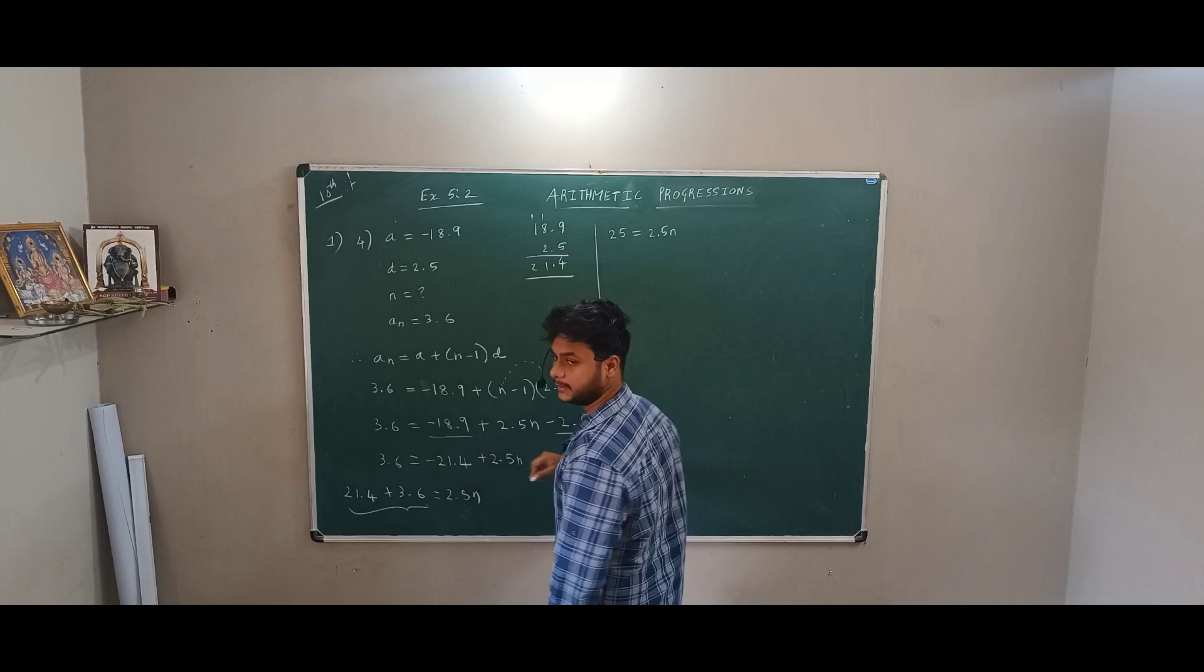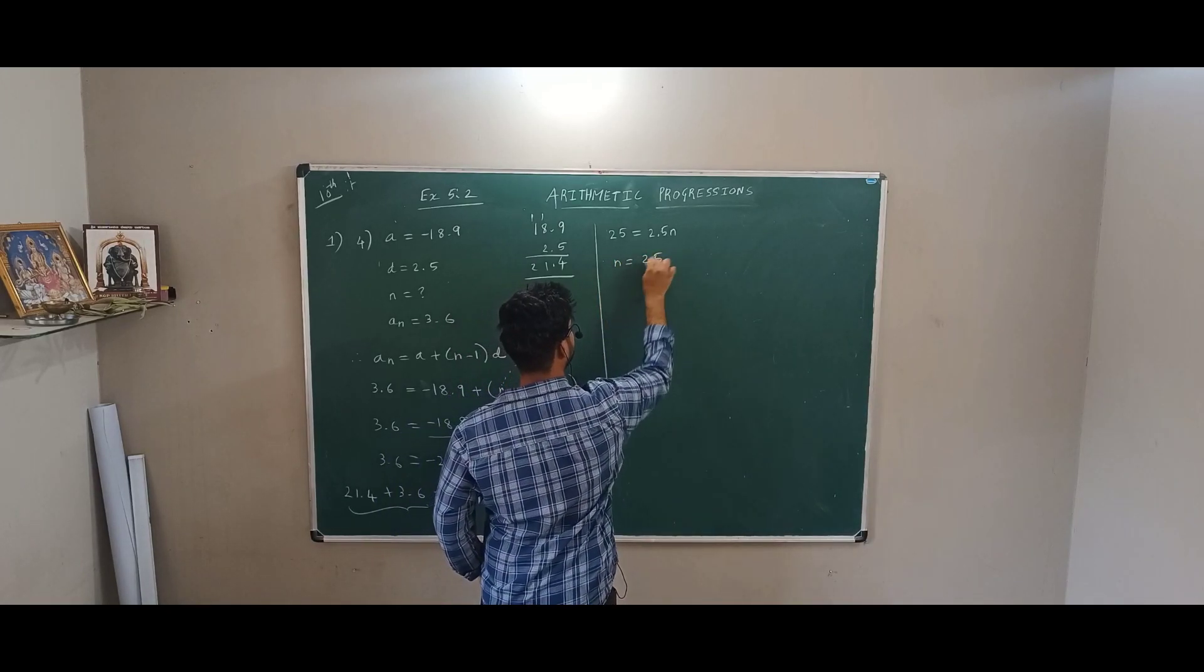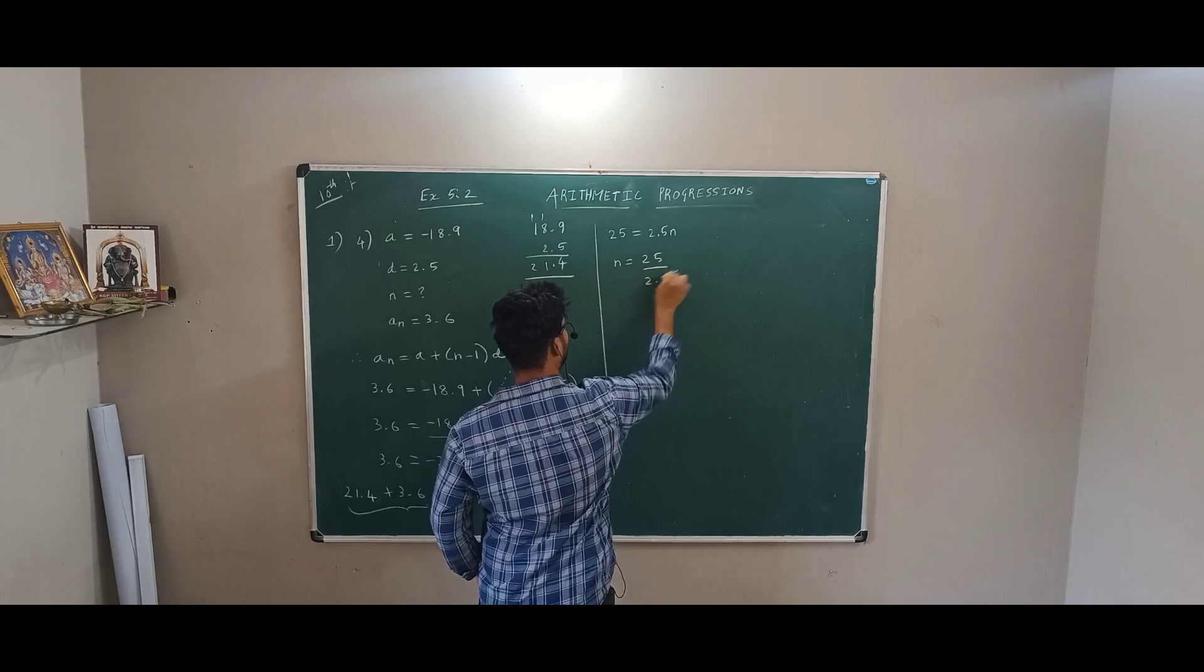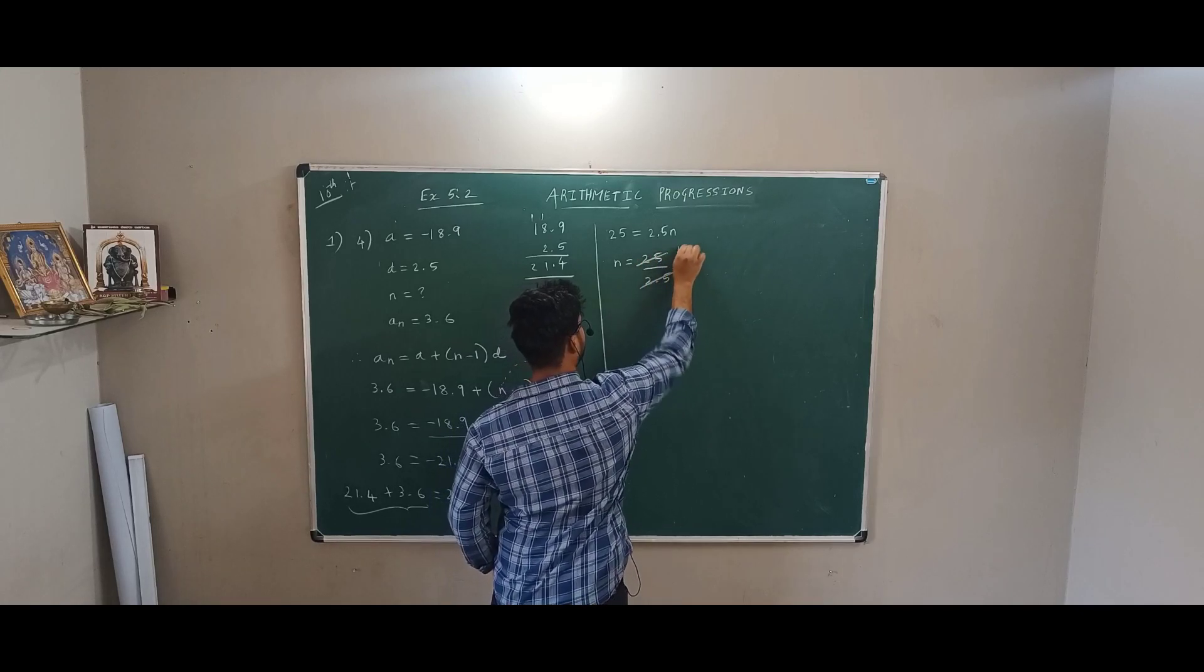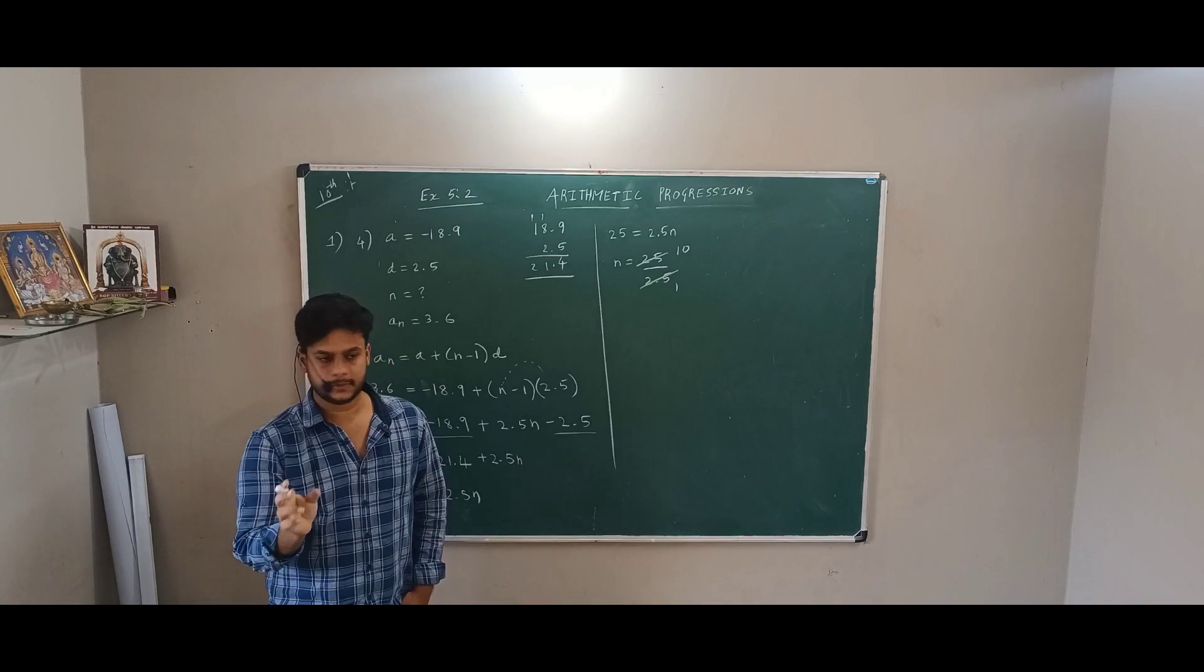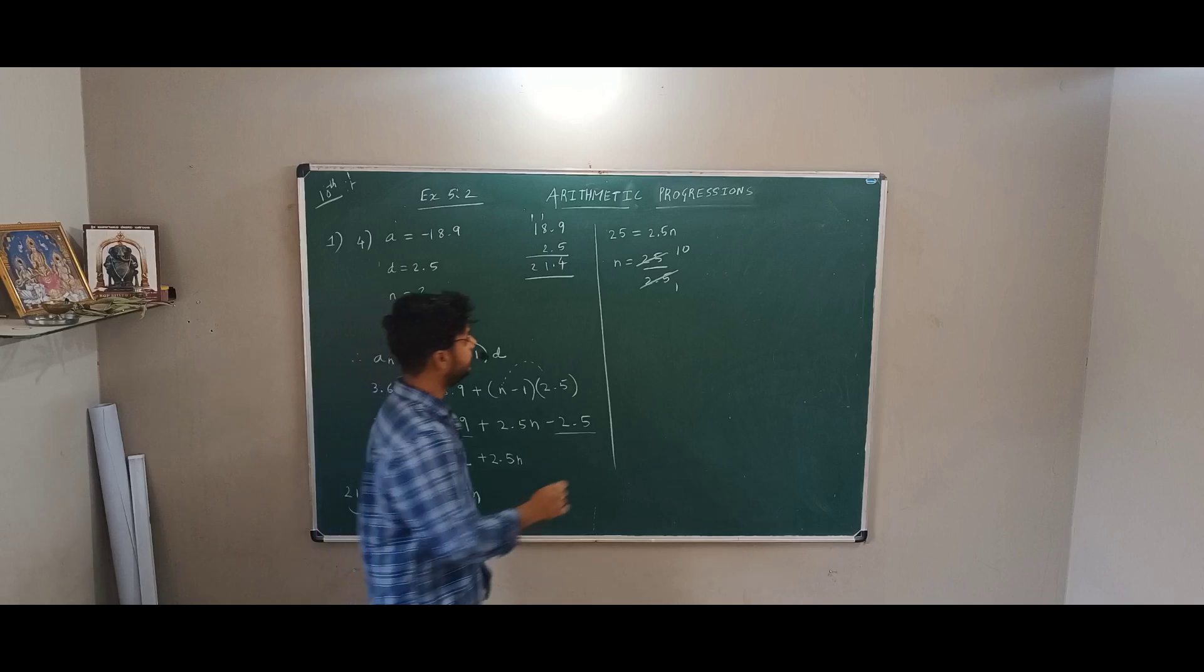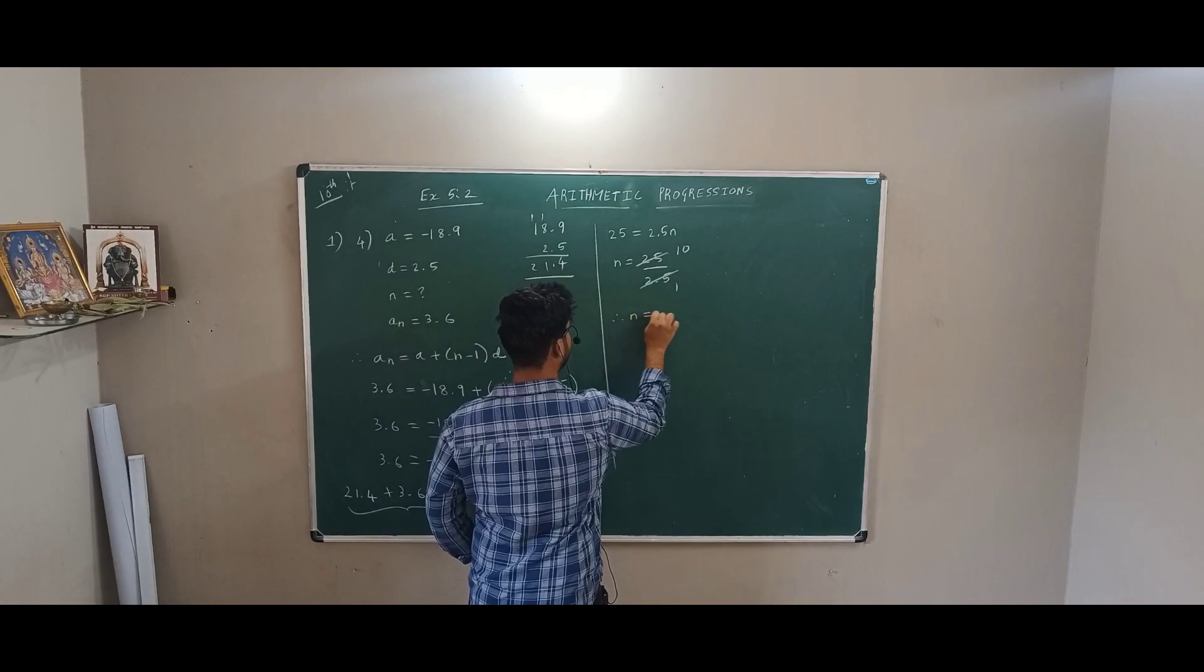2.5, 2.5N is equal to 25 by 2.5. 2.5 ones are 2.5, 10s are, easy, 2.5 ones are 2.5, 10s are 10 to 10. If you do, you will get 25. So N is equal to 10.